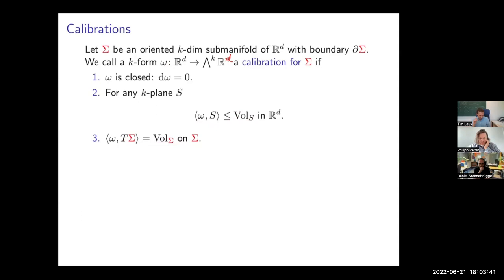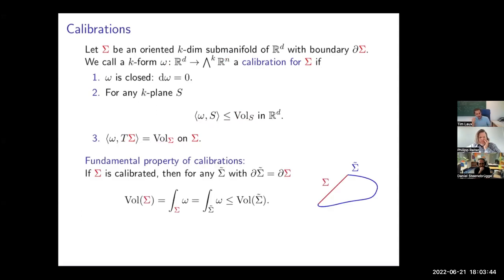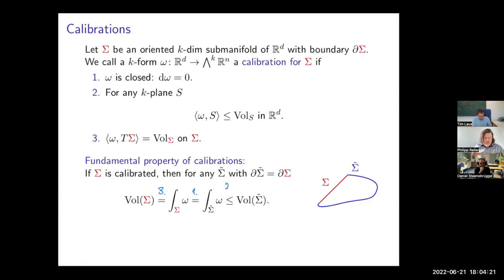When you have such a calibration, there's this fundamental property: if you have a calibrated sub-manifold and take any other sub-manifold with the same boundary, you can easily obtain the inequality. Using condition three you compute the volume; using closedness and Stokes' theorem you express this as an integral over the competitor; and by condition two you get that this integral is bounded above by the volume of the competitor. So whenever you have a calibrated surface, it minimizes the area.